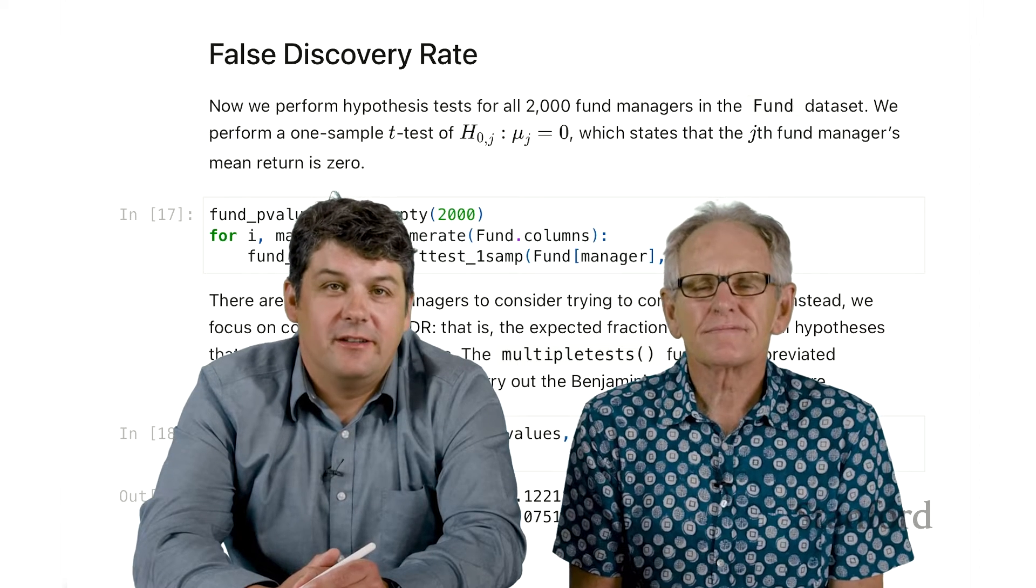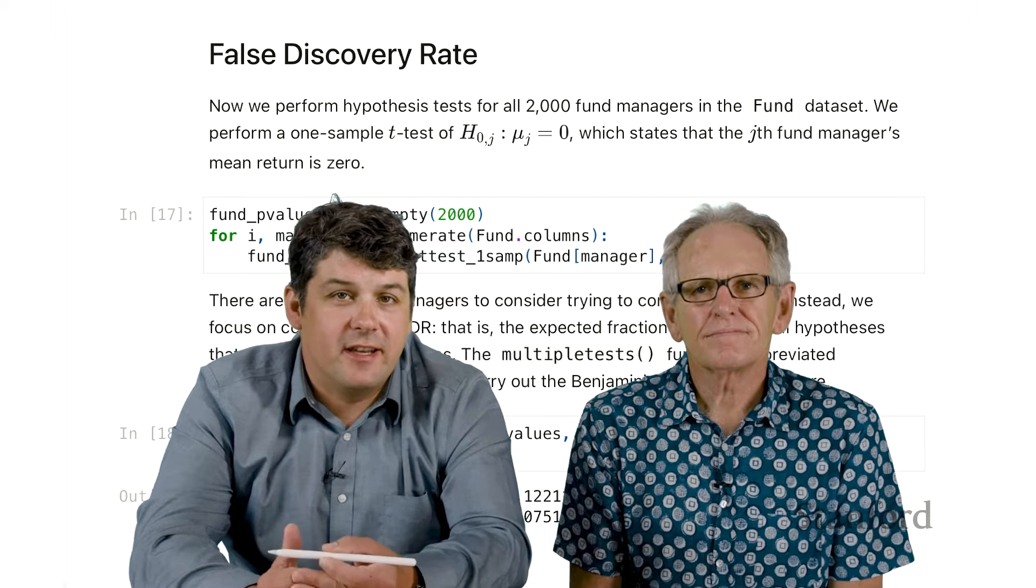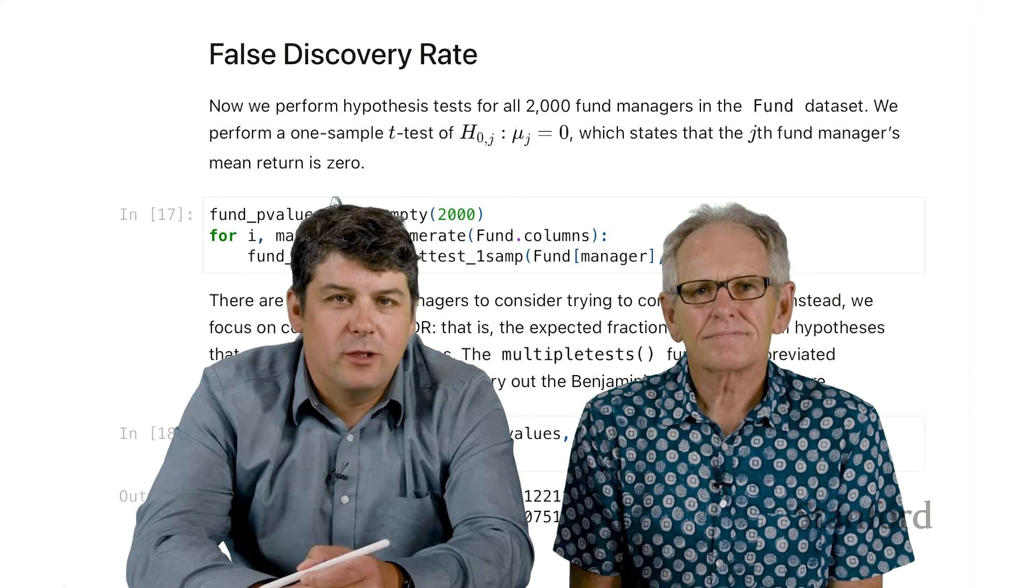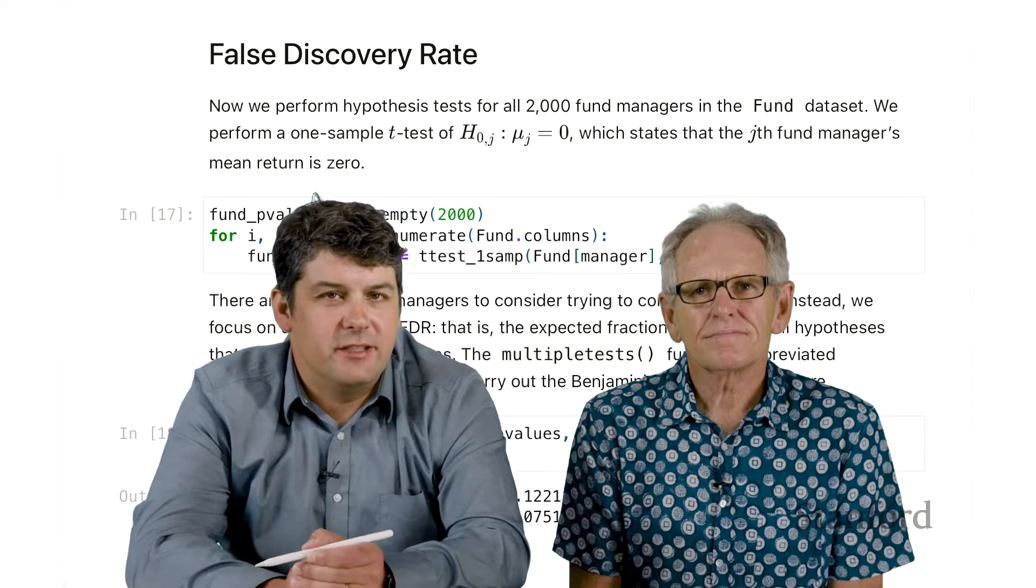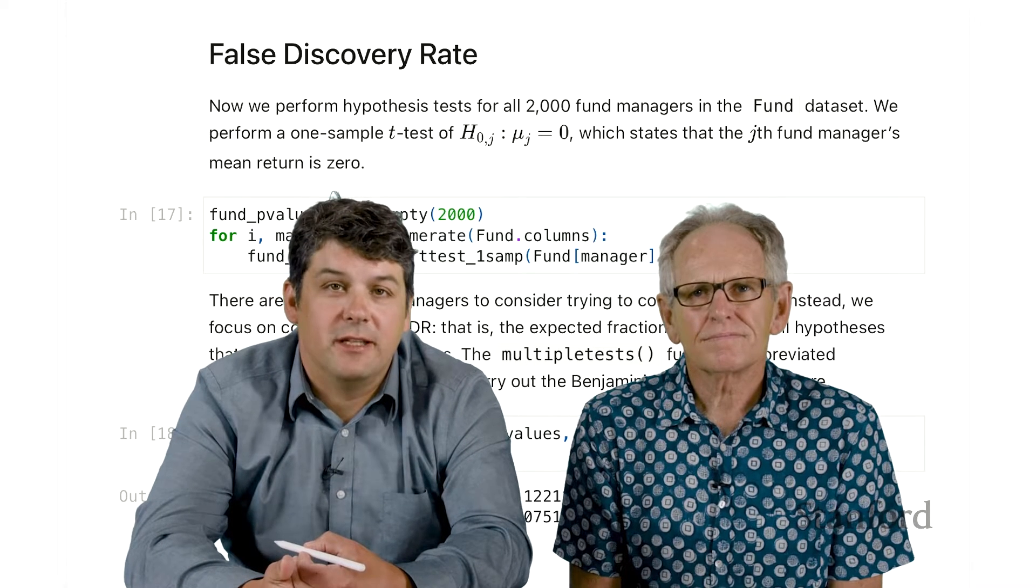Our next topic is the false discovery rate. This is similar to the family-wise error rate. This is a quantity that statisticians have worked out how to design testing procedures so that we have a guarantee that we can control this quantity at a reasonable level.